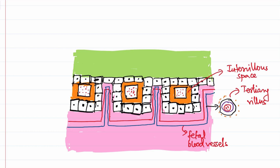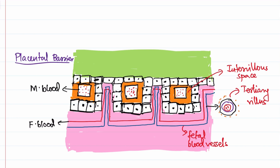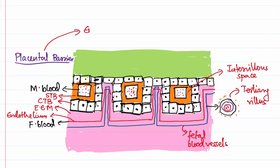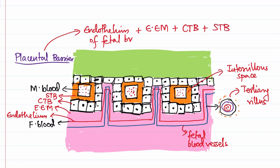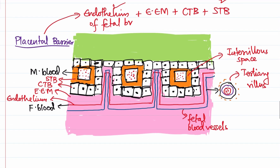Now it's time to define the placental barrier. The placental barrier refers to the barrier between the maternal blood vessel and the fetal blood vessel. It is constituted by: the endothelium of the fetal blood vessels, the extra embryonic mesoderm, the cytotrophoblast, and the syncytiotrophoblast. This placental barrier is formed in the first trimester. In the last trimester, only the syncytiotrophoblast and the endothelium act as the barrier.